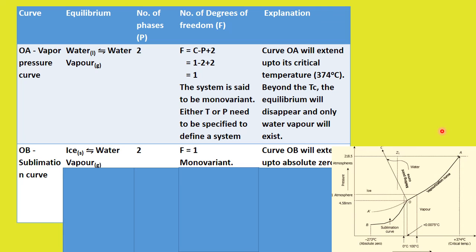Curve OA ends at point A, which is called the critical point. Above this point, it is difficult to distinguish water and water vapor — only water vapor exists. The critical point of water is 374 degrees Celsius at a pressure of 218.5 ATM. Above this, the substance exists only in the vapor phase.